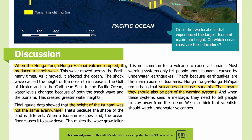Discussion: When the Hunga Tonga-Hunga Ha'apai volcano erupted, it produced a shock wave that moved across the earth many times. As it moved, it affected the ocean, causing height increases in the Gulf of Mexico and the Caribbean Sea. In the Pacific Ocean, water levels changed because of both the shock wave and the tsunami, causing greater water heights. Tidal gauge data showed that tsunami height was not the same everywhere, because the shape of the land is different. It is not common for a volcano to cause a tsunami — most warning systems only tell people about tsunamis caused by underwater earthquakes.